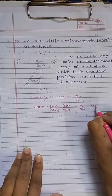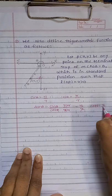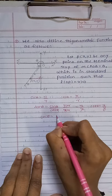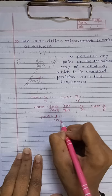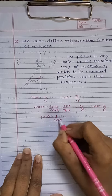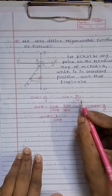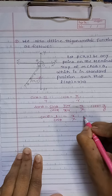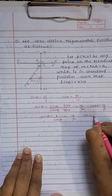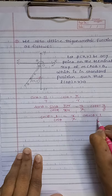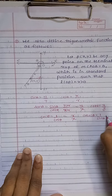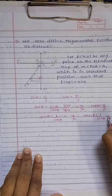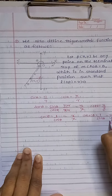Cot theta equals X upon Y. Sec theta equals 1 upon cosine theta, and since cosine theta is X upon R, we get sec theta equals R upon X. And cosec theta equals 1 upon sine theta, so putting the value we get cosec theta equals R upon Y.